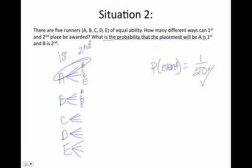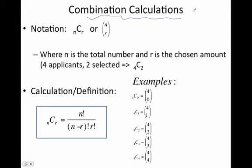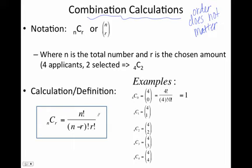This next tool you should be very familiar with — we tackled it in the last section when we were doing the coefficients of our expanded binomials. This is the combination calculation, and again, this is where order does not matter. You're selecting from a group of a certain number of elements and order doesn't matter — you're just trying to figure out what the different combinations are. We do have an example here, and we worked these out in the last PowerPoint.